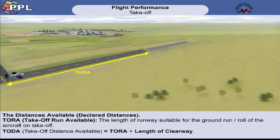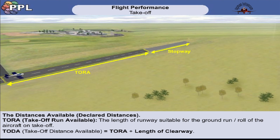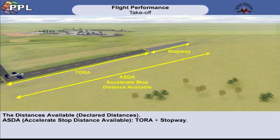There is one more additional section that can be found at the end of the runway in the direction of take-off. This section is only to be used to help bring the aircraft to a stop in the event of an abandoned take-off — it cannot be used for any other purpose. This extra section is known as a stopway. If we take the TORA plus any length of stopway, we have what is called the accelerate stop distance available, or ASDA for short.